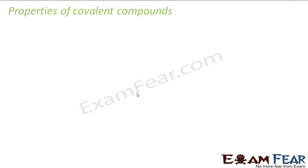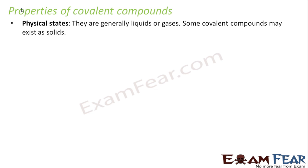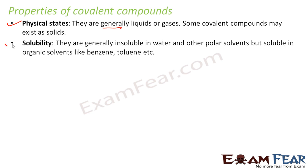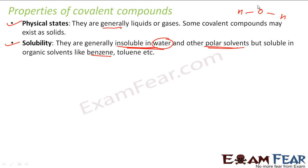Now let's look at some properties of covalent bonds. First, physical state: covalent compounds are generally liquid or gas, though some may exist as solids because the covalent bond is not as strong as the ionic bond. Second, solubility: they are generally insoluble in water and other polar solvents, but soluble in organic solvents like benzene. Water is a polar solvent — in the H2O molecule, oxygen is slightly negative because it attracts electrons more strongly, and the hydrogens are slightly positive.